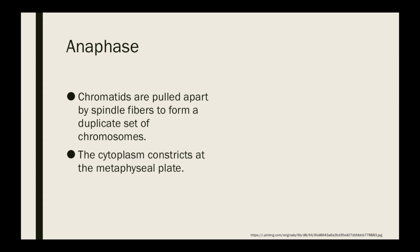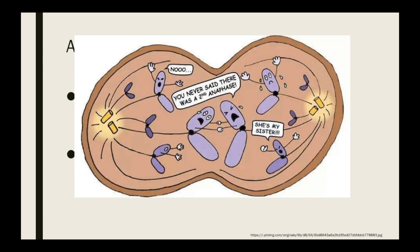Somebody created a cartoon that's exactly how I picture it. In anaphase, those chromatids that formed the full Xs are now being pulled apart — sadness. Half the X goes to the right side to make one cell, and half the X goes to the other side to make the other cell.